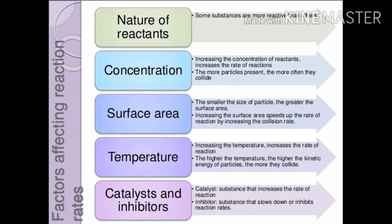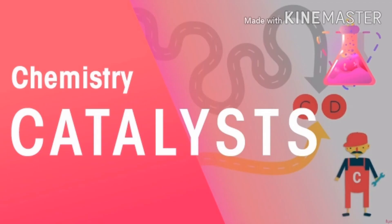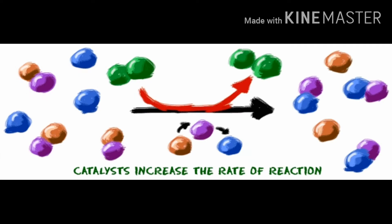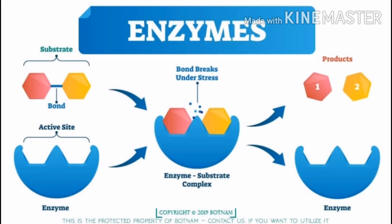The fourth factor is temperature of reaction. The rate of reaction increases when the temperature of reaction increases. One more factor which affects the rate of reaction is catalyst. The substance in whose presence the rate of chemical reaction changes without causing any chemical changes is called a catalyst. In our body, enzymes increase the rate of chemical reaction, and hence these enzymes are biological catalysts.